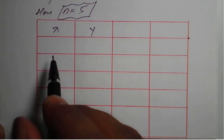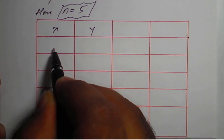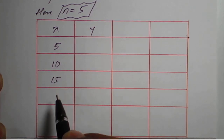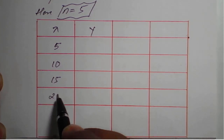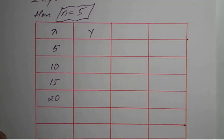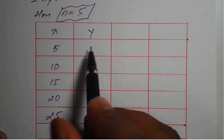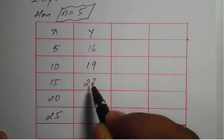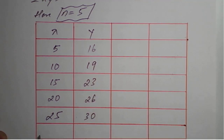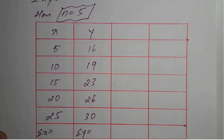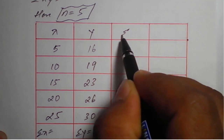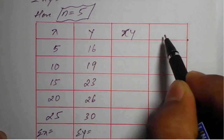In this table, we have to fill the values of x. The x values are 5, 10, 15, 20, 25. Then y values are 16, 19, 23, 26, and 30. We need to calculate summation x and summation y. By seeing the normal equation, we need a column for xy and x square.